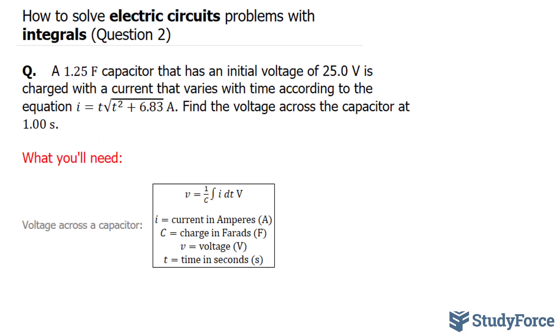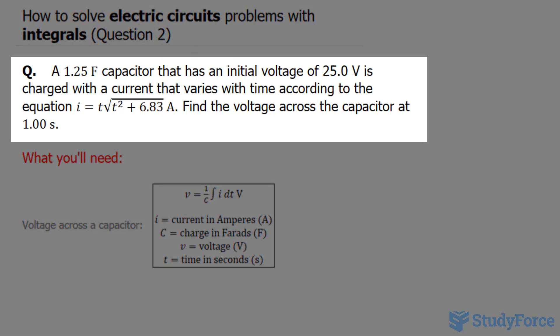In question 2 of this series we're asked: a 1.25 farad capacitor that has an initial voltage of 25 volts is charged with a current that varies with time according to the equation shown here. Find the voltage across the capacitor at 1 second.